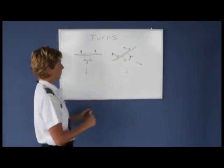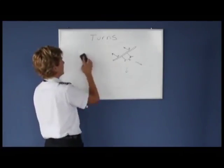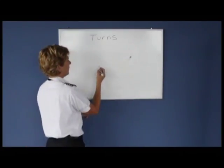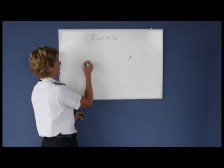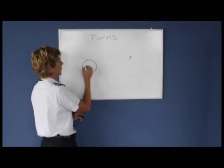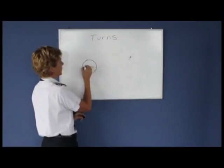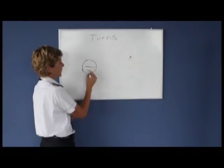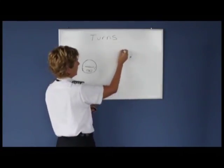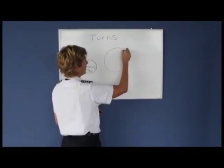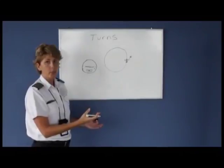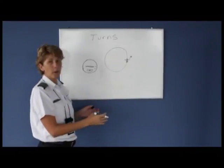One of the instruments in the airplane is called the turn coordinator, and we can use it to evaluate the quality of our turn. The turn coordinator has a little ball that can move freely by centrifugal force. If you make a circle in an airplane, ideally you want the tail of the airplane to follow directly behind the nose. That would be a coordinated turn where you've used the proper amount of aileron and the proper amount of rudder together.